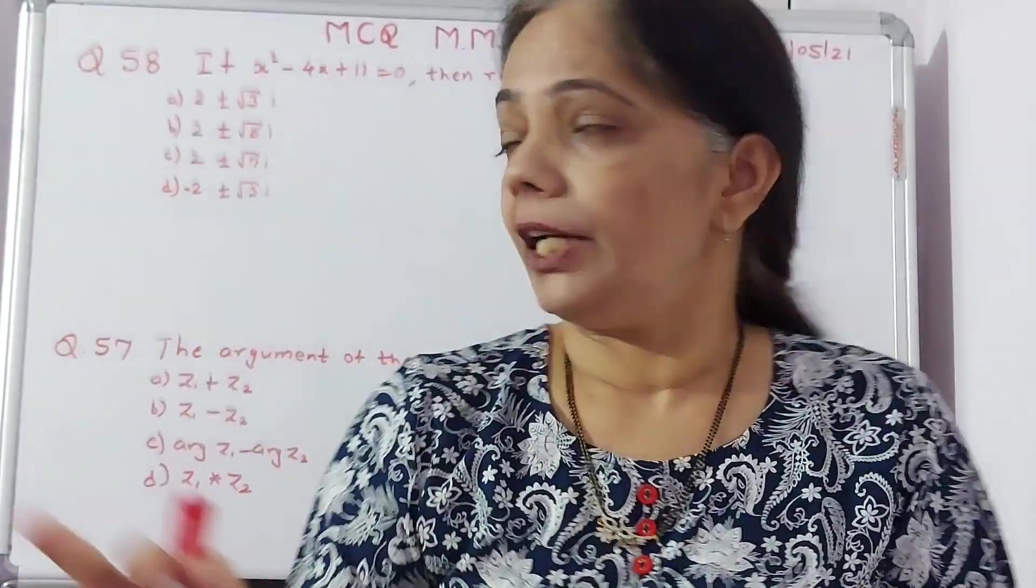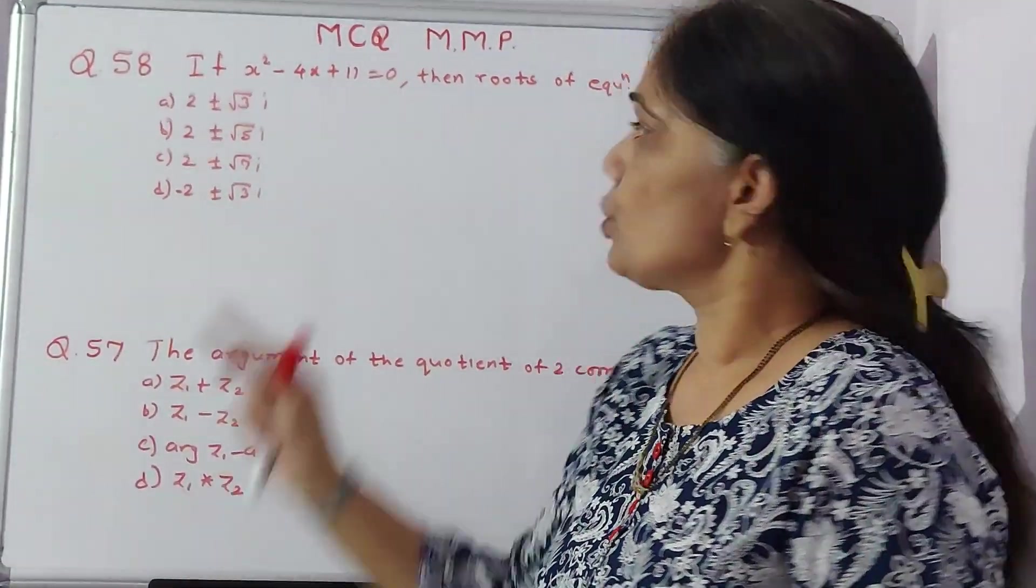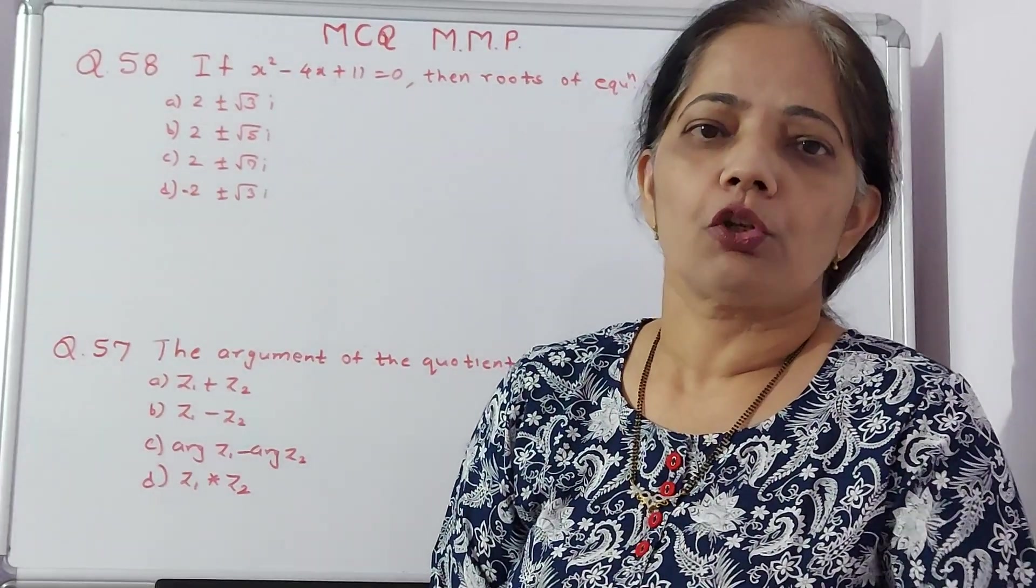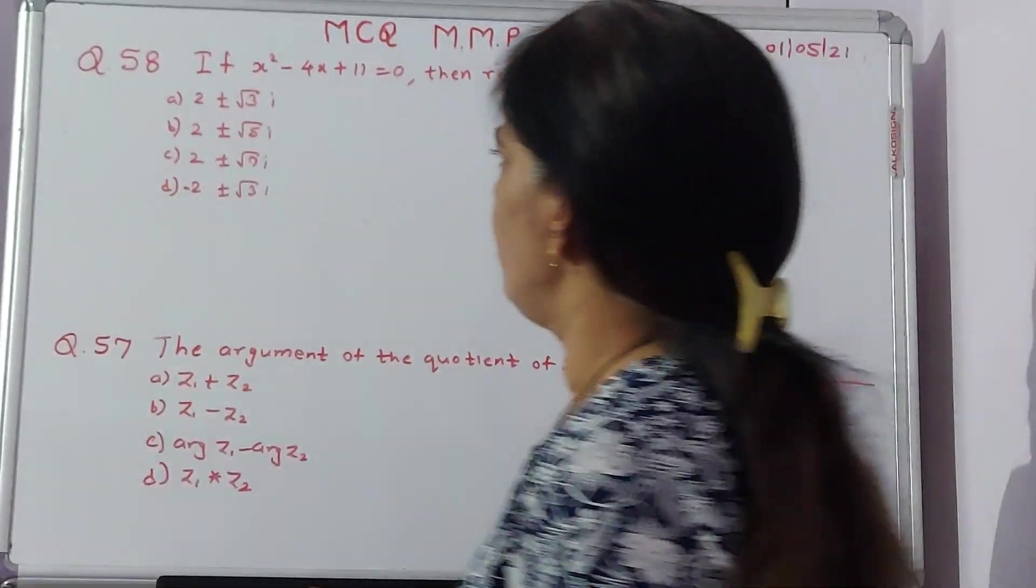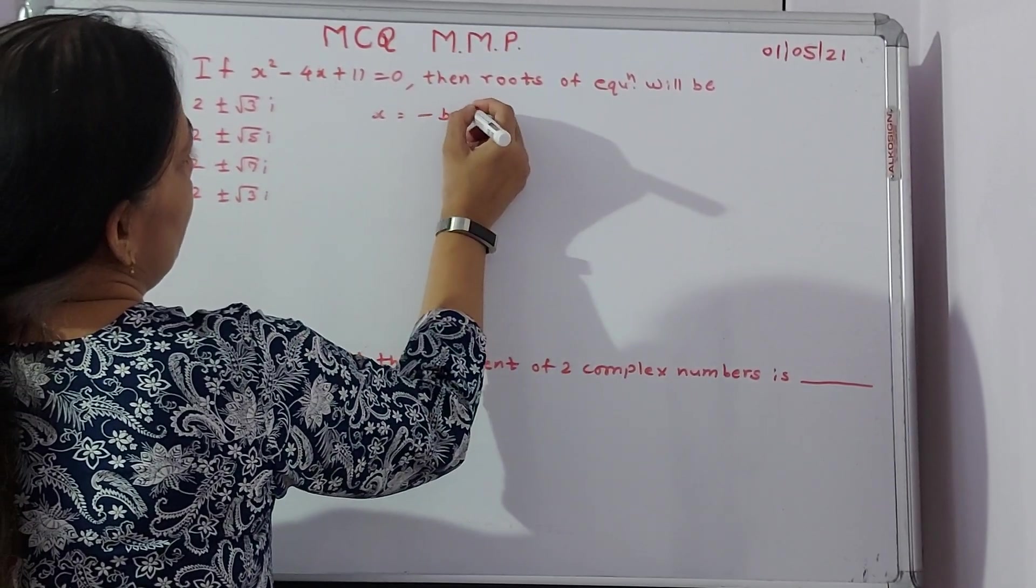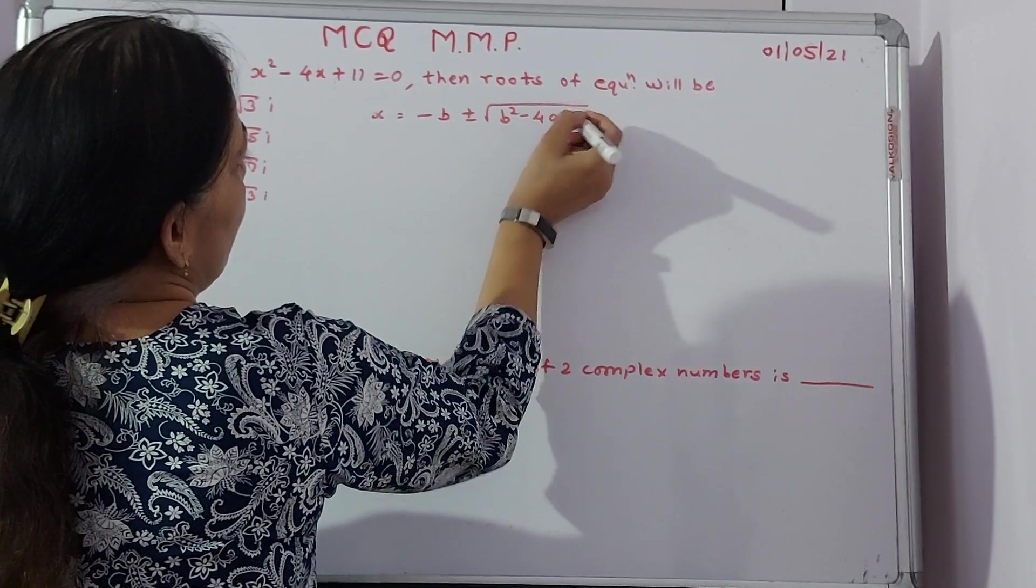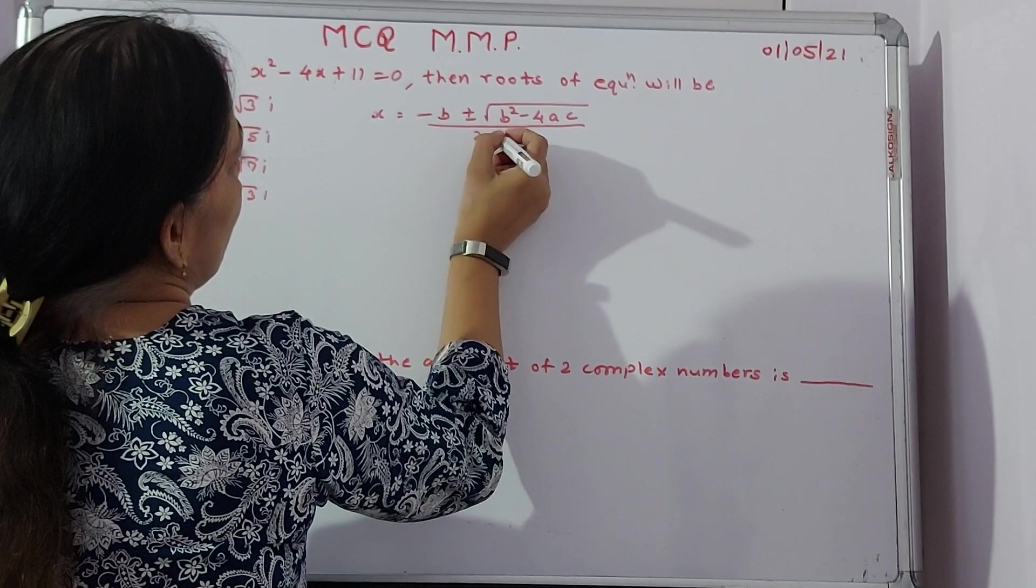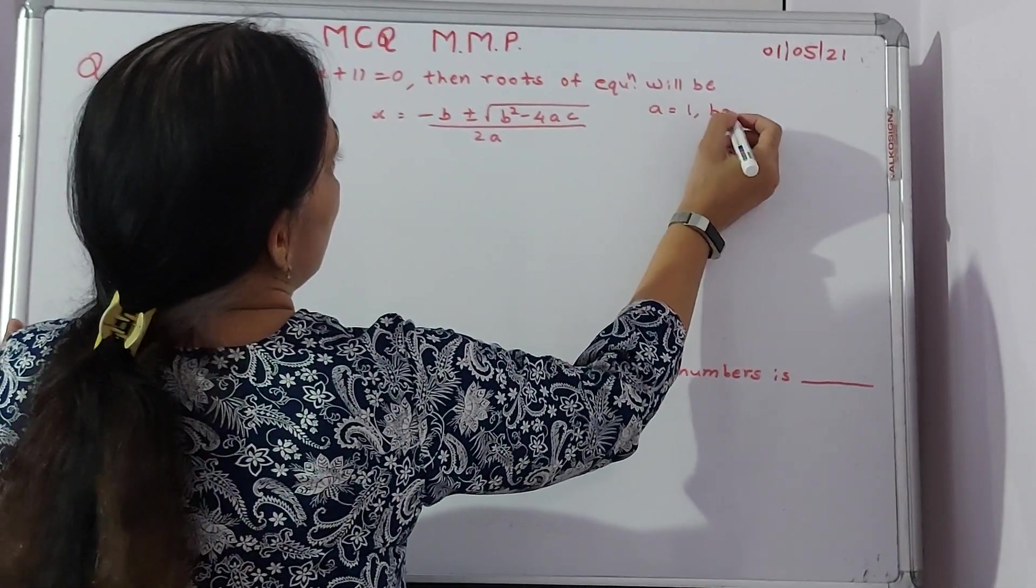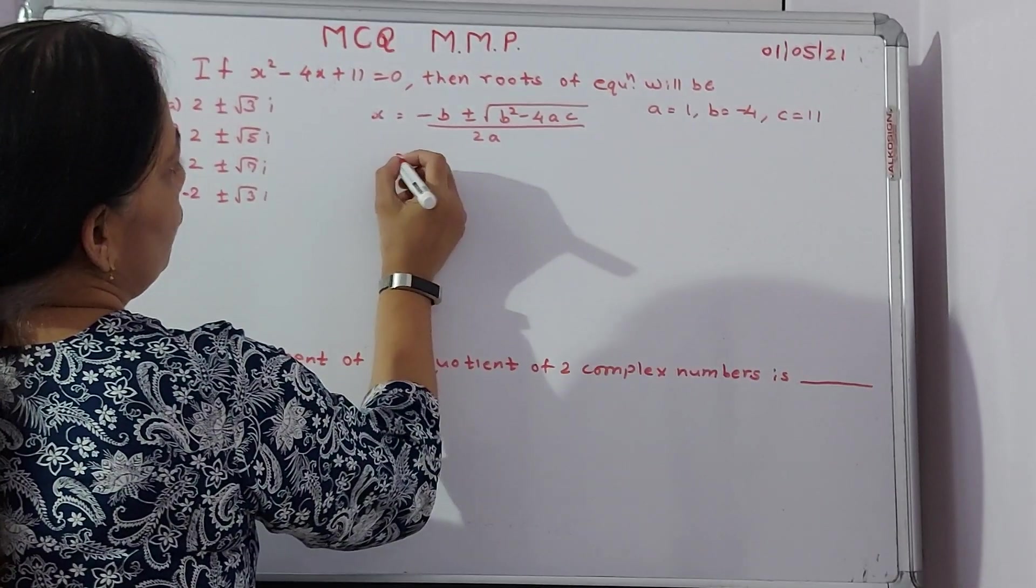Next question. Question number 58 is, if x square minus 4x plus 11 equals 0, then the roots of the equation will be. Obviously, this is not an equation which we can solve it immediately. So we have to do the solution which is typical, which is minus B plus or minus B square minus 4ac divided by 2a. In this case, how much is my A? A is 1. What is B? B is minus 4. And what is C? C is 11.